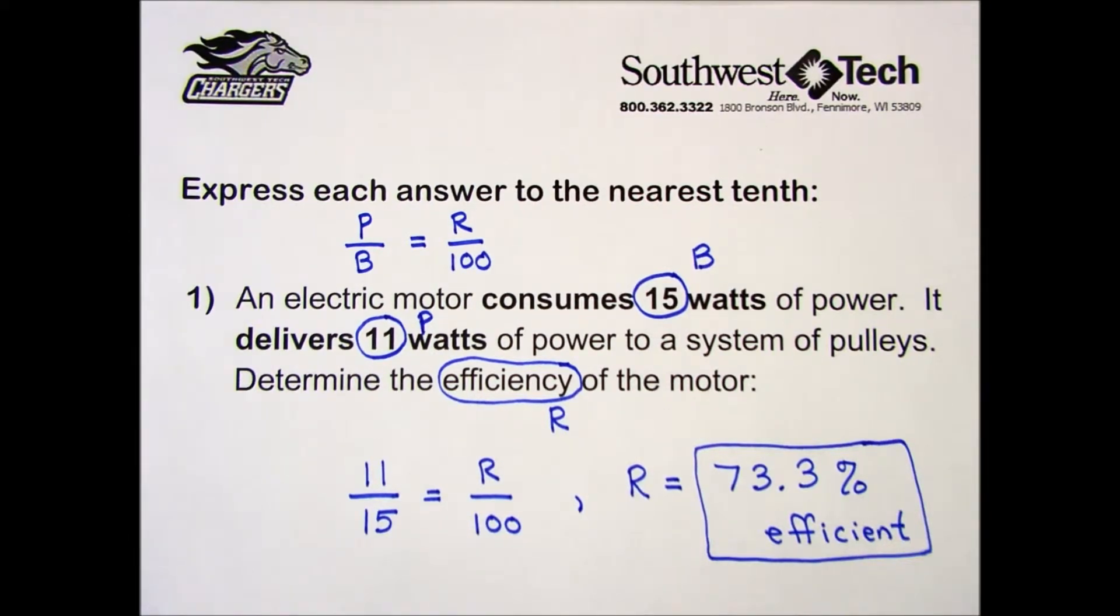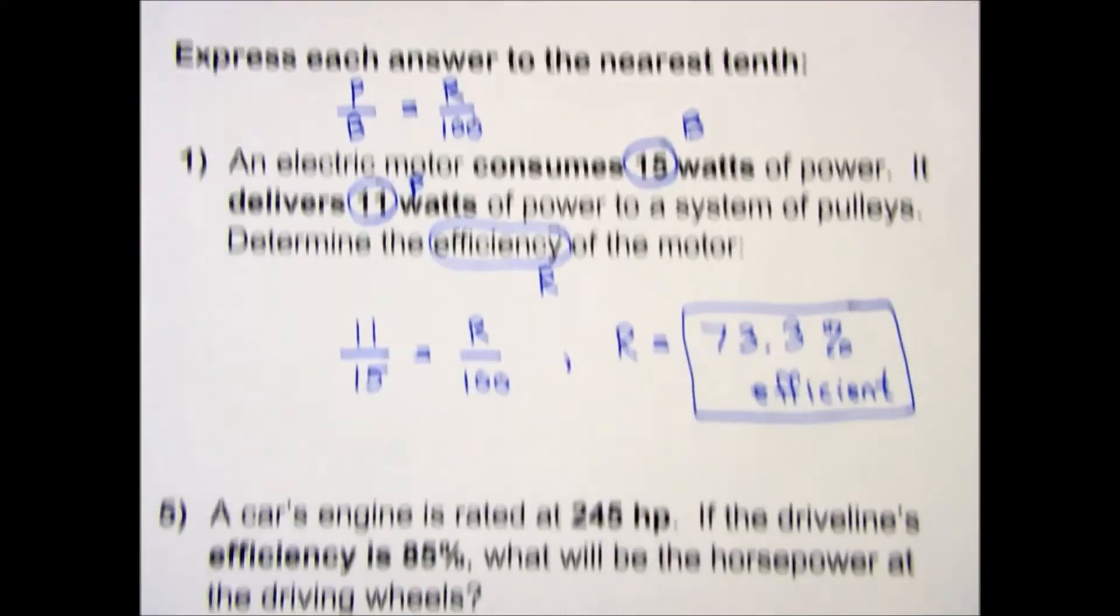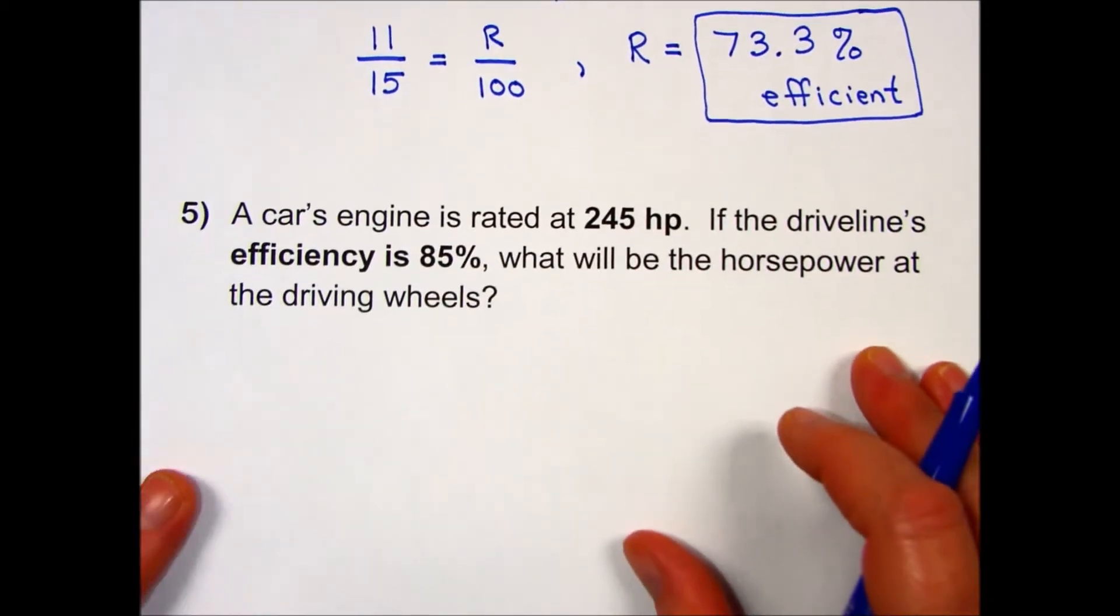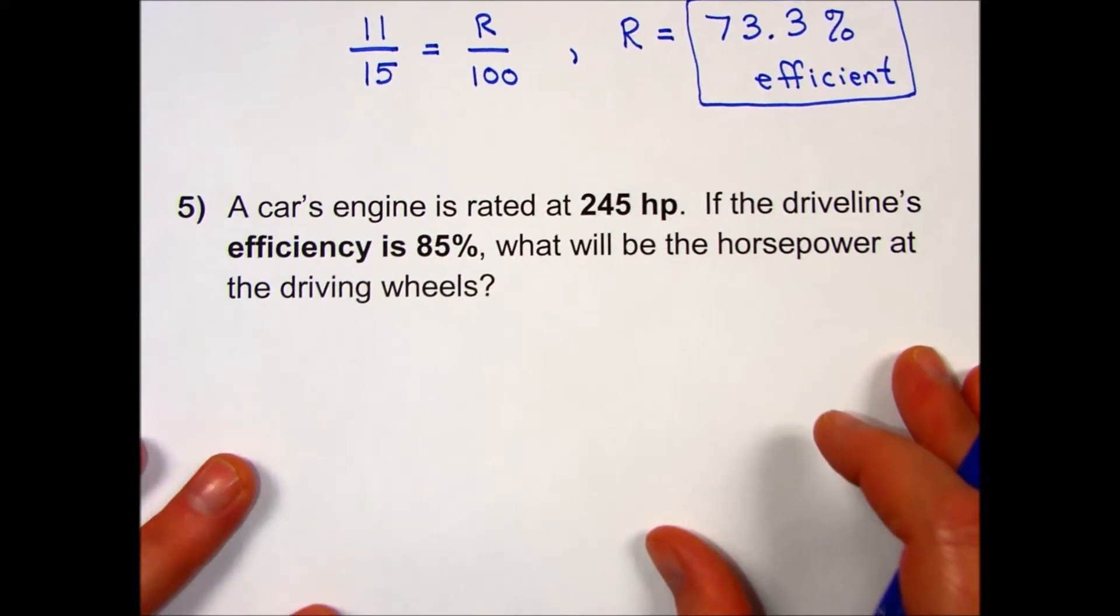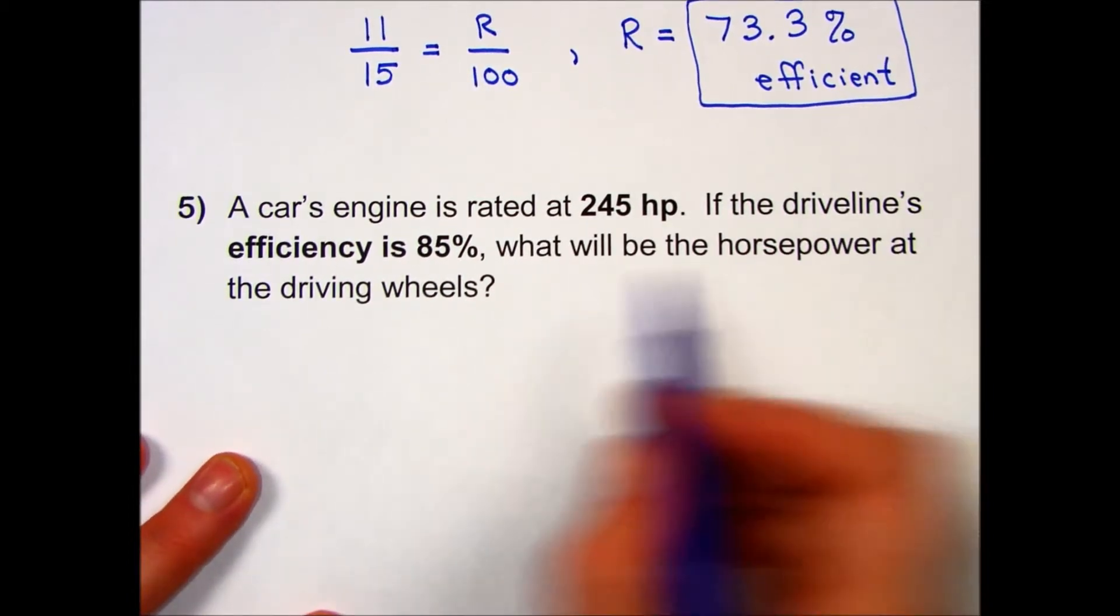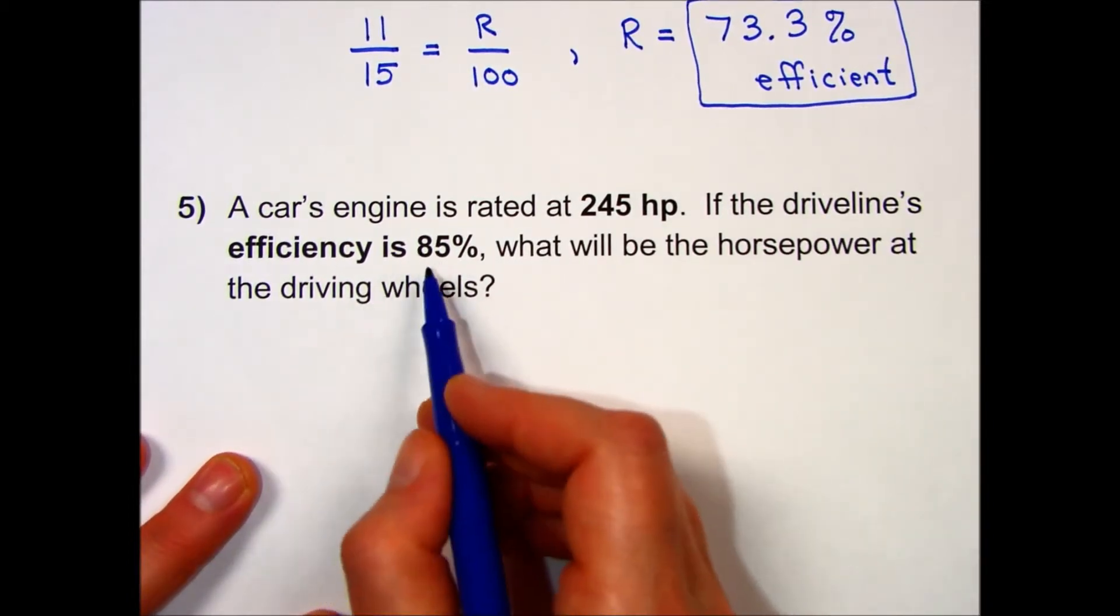We'll do one more together. A car's engine is rated at 245 horsepower. If the driveline's efficiency is 85 percent, what will be the horsepower at the driving wheels?